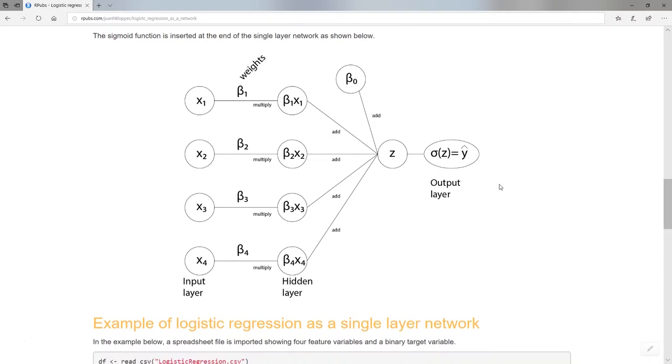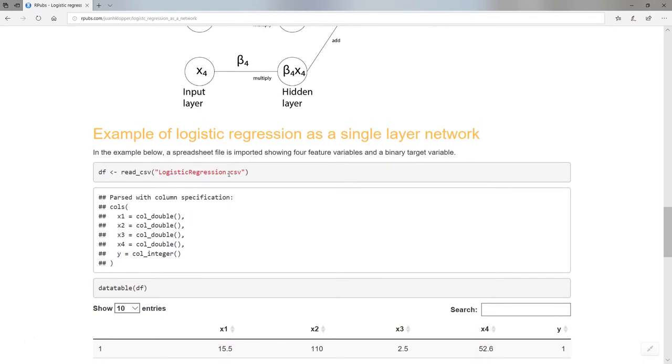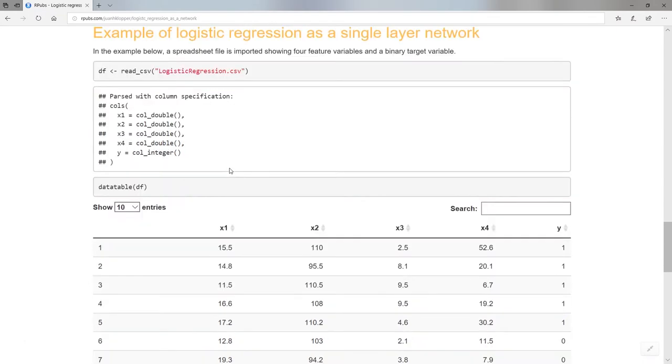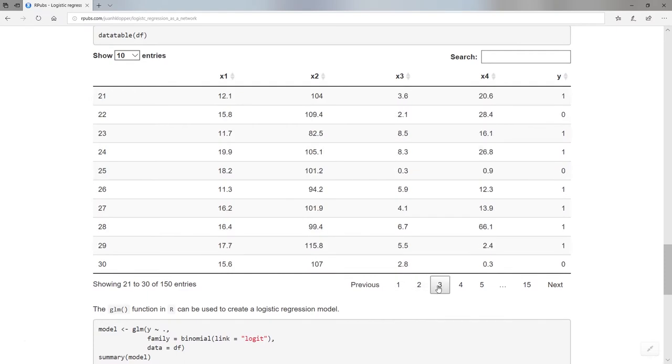Let's look at an example. I'm going to import this logistic regression CSV spreadsheet file. Here we have it nicely expressed on the screen. We see x sub one, x sub two, x sub three, and x sub four. Those are my four feature variables and the target variable. For the first patient here we have 15.5, 110, 2.5, 52.6. You can imagine these are variables for some blood results, and the outcome, the target variable, is a one. There's another one, a one, a one, a one, there's zero, zero. You can go through and click on all of these and run through this whole data set of 150 entries.